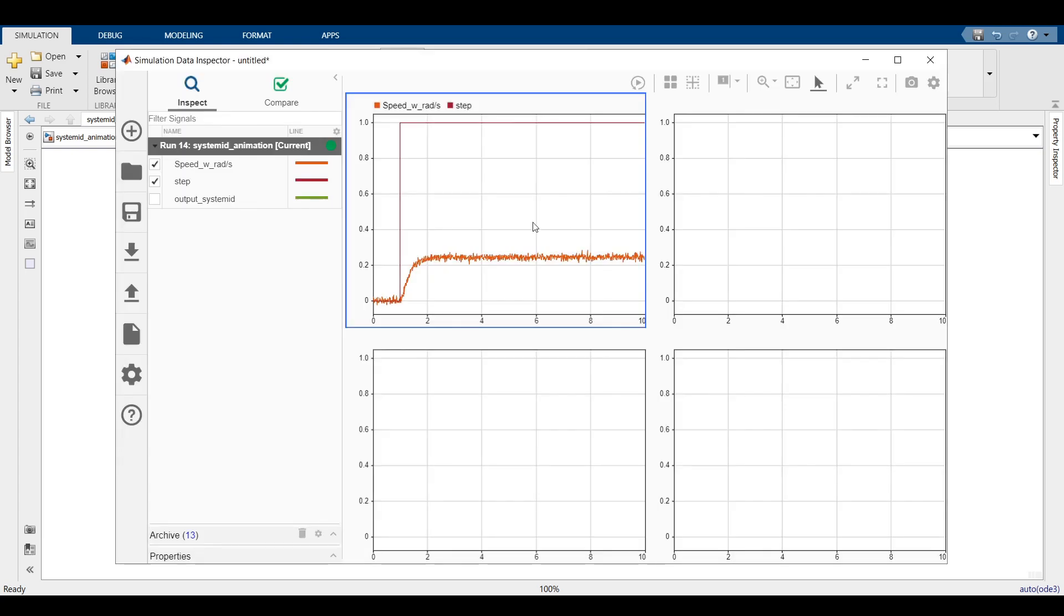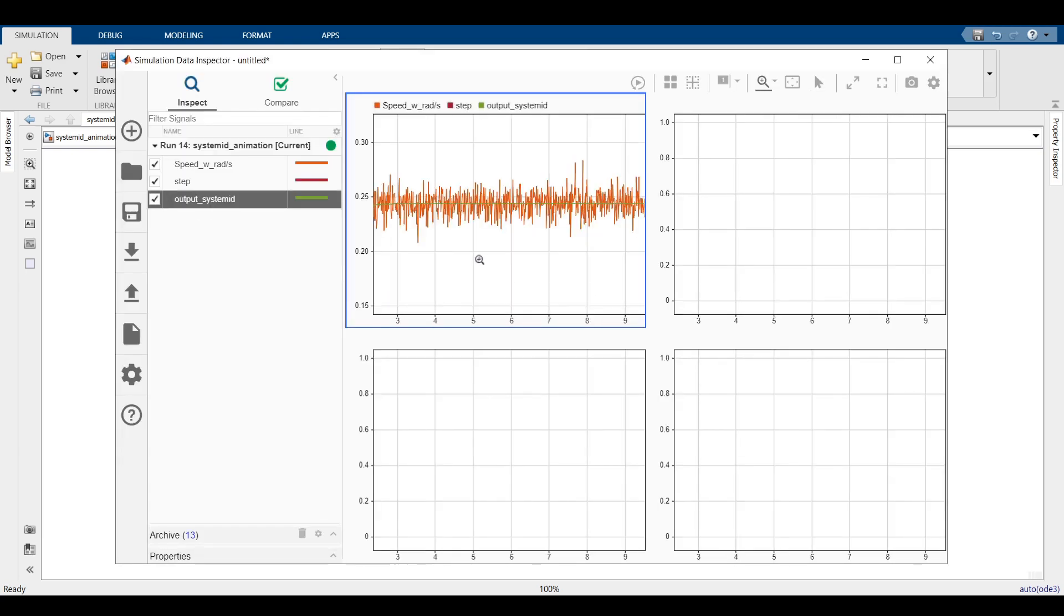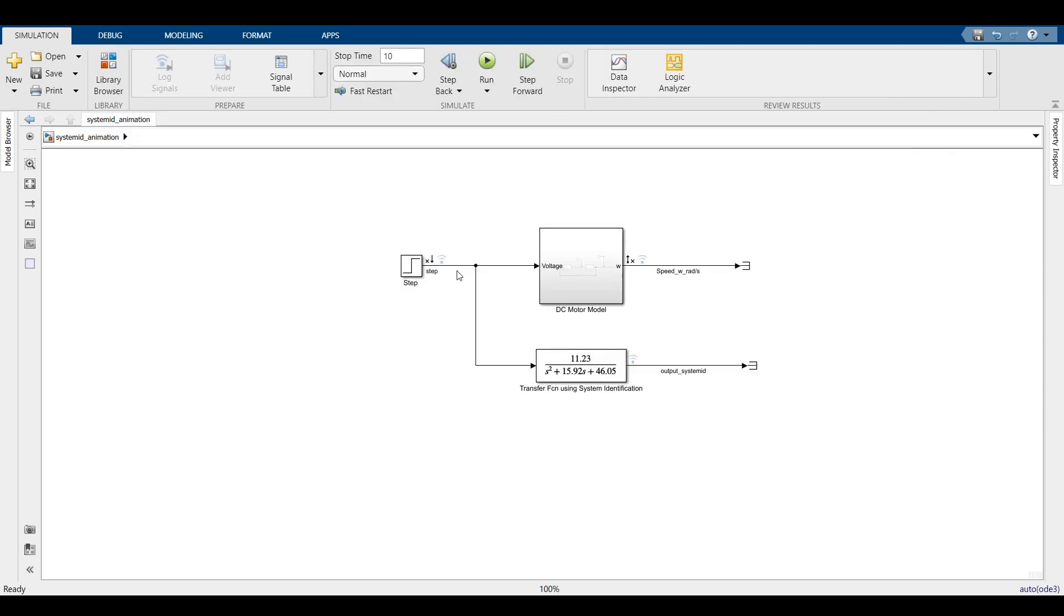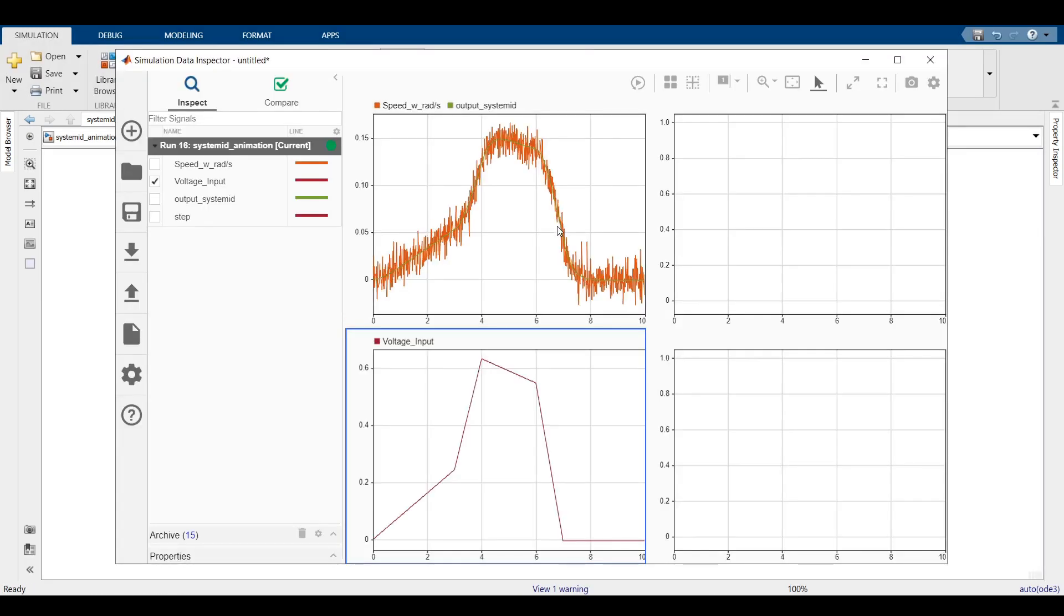Run the simulation and compare it with the model output. This is a good match. The output from the derived model is very close to the output from the original model. But we should also validate our new model with different inputs so as to confirm that the new model behaves reasonably well for all kinds of inputs. Let us run the simulation again. It matches well. So, System Identification works for us.